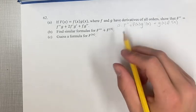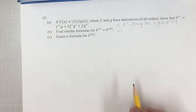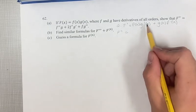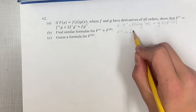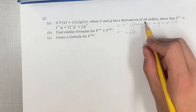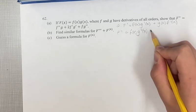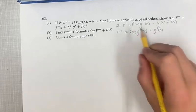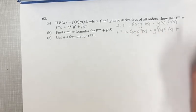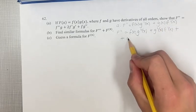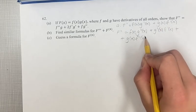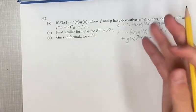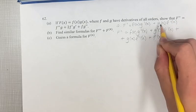For the second derivative, we are going to be doing the same thing, except we have two products that we have to deal with. So for this first product, we have the first times the derivative of the second, and the derivative of the derivative is the second derivative, plus the second times the derivative of the first.